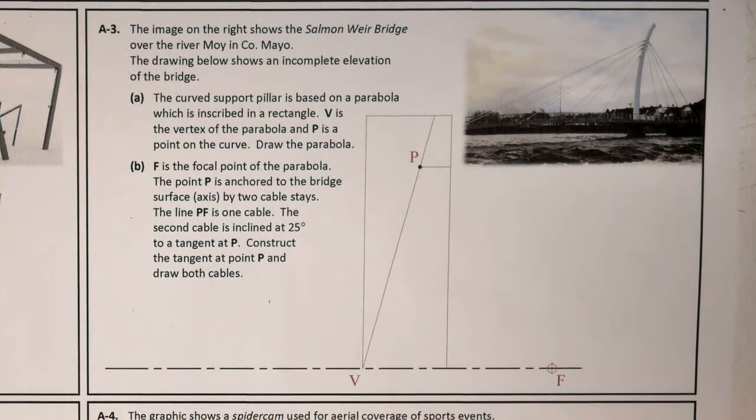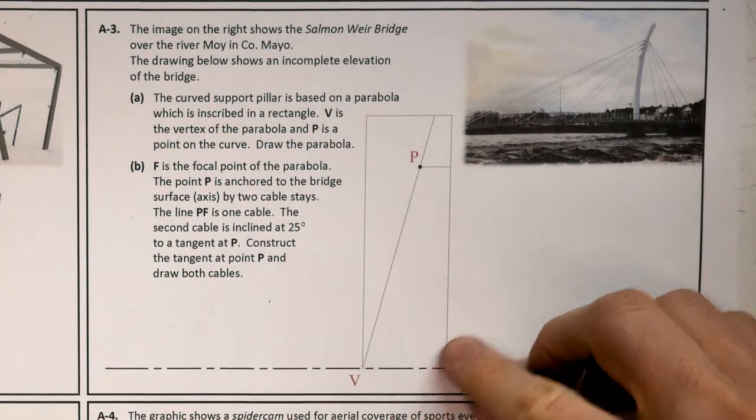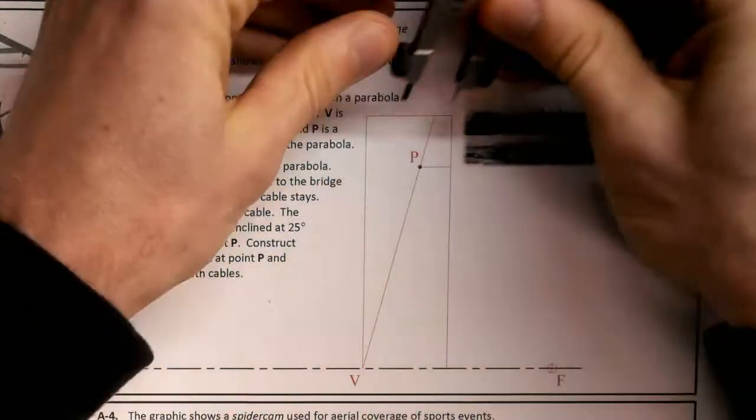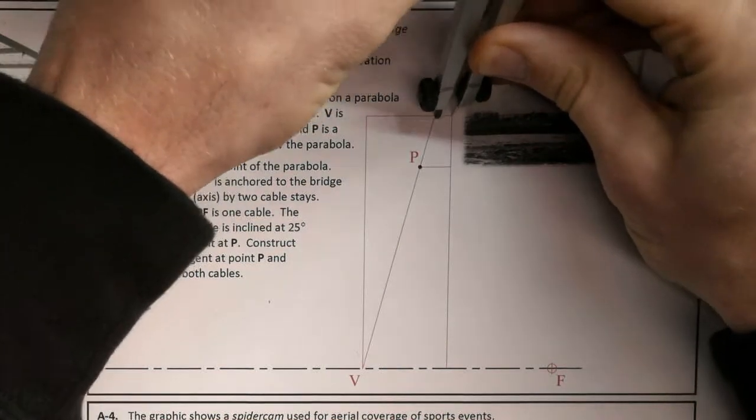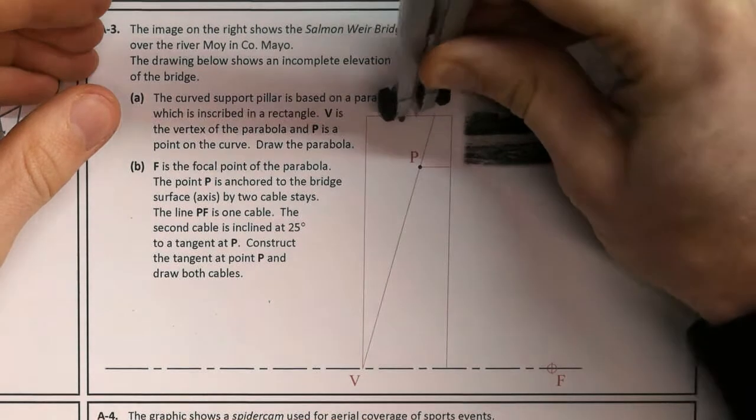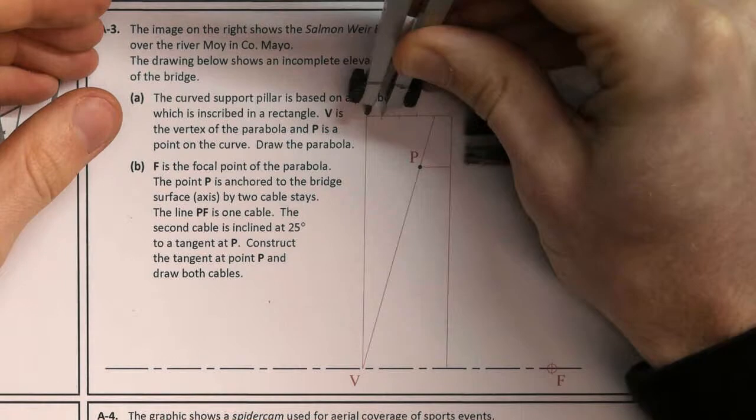This is our junior cert construction for drawing a parabola, and we're just drawing a semi-parabola. Usually we divide up this line into equal parts, but they've got one division done first. I'm just going to get that distance on my compass and step it off once, twice, three times, and that should be equal to there. Correct.